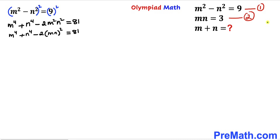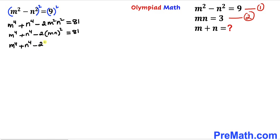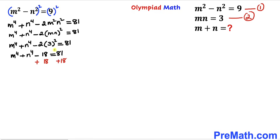Now we can rewrite m squared times n squared as (m times n) whole square. From equation 2, m times n equals 3, so we substitute to get m to the power 4 plus n to the power 4 minus 2 times 3 squared equals 81. Since 3 squared is 9 and 9 times 2 is 18, we have m to the power 4 plus n to the power 4 minus 18 equals 81, so m to the power 4 plus n to the power 4 equals 99. I'll label this as equation 3.